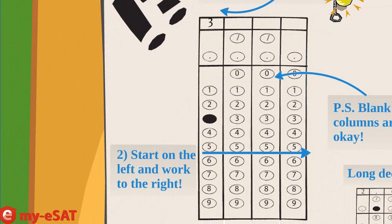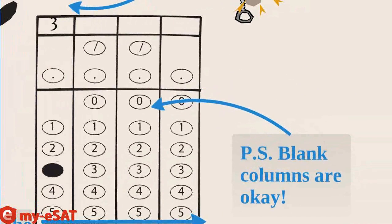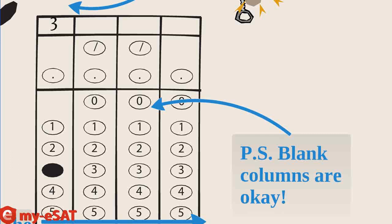A good tip is to always start on the far left column and grid as far right as possible. For example, if your answer is a 3, you would write a 3 on the top left column and then bubble it below. Voila! It's okay to leave all the other columns blank. Nobody will look at those.